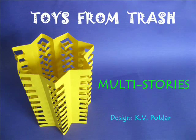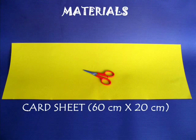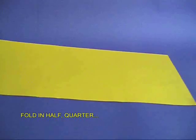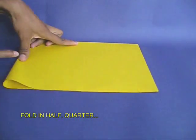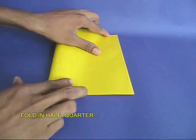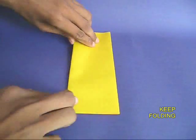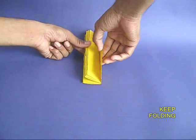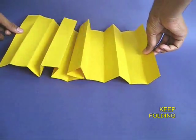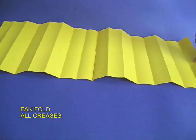This very beautiful multi-storied apartment can be made from a long card sheet. Take the card sheet and fold it into half, then a quarter, then one eighth, and then one sixteenth. Keep folding. If you open up, you will see sixteen fold lines.